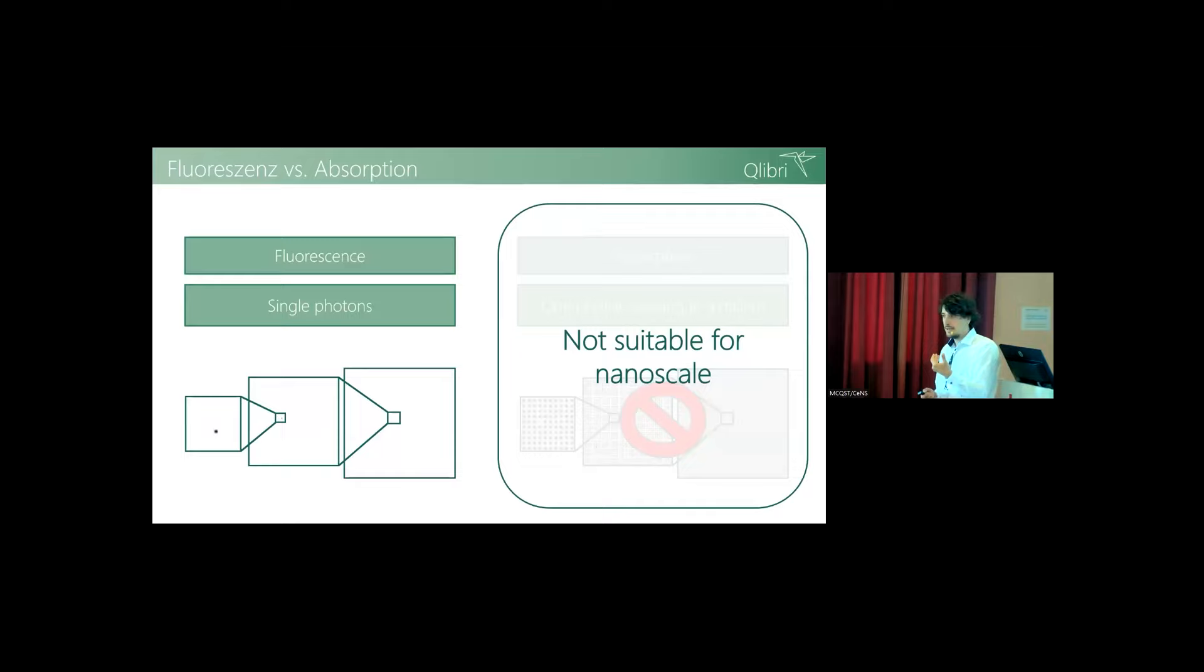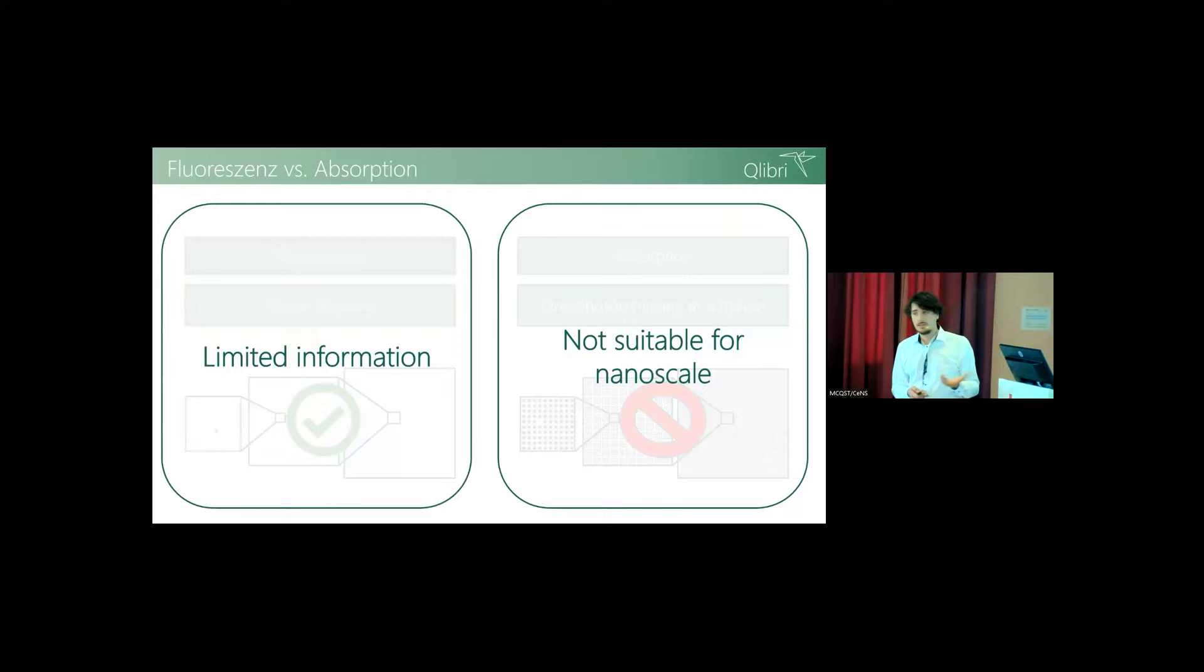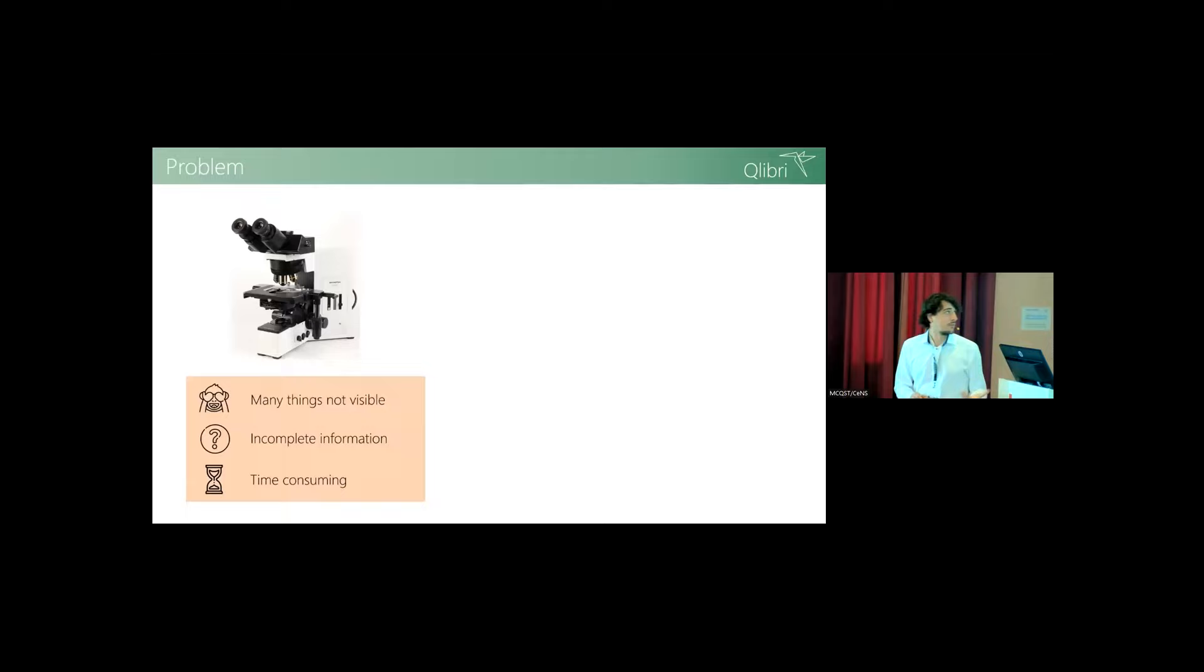The other part is fluorescence, detecting emitted light. You'd have a single photon, and as most probably know, this is actually even if it sounds complicated, rather easy. We have detectors to do that. The problem is that of this nanoscale matter, only a very small percentage actually shows fluorescence, and of these particles, even probably a small percentage of the energy levels that are interesting show fluorescence. You get only very limited information.